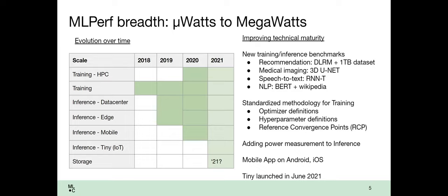Our benchmarks now span from microwatts to megawatts. At the high end, we have training HPC where we've seen benchmarks run on something like a tenth of Fugaku, the world's largest supercomputer, all the way down to microwatt level IOT devices. Along the way, we've been adding benchmarks, improving how we handle things, especially on training for convergence and hyperparameter definitions to make the benchmarking easier, more reproducible.